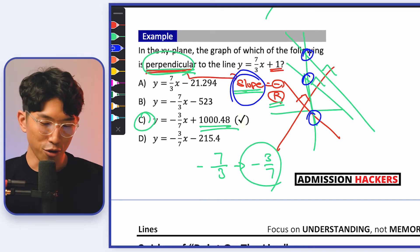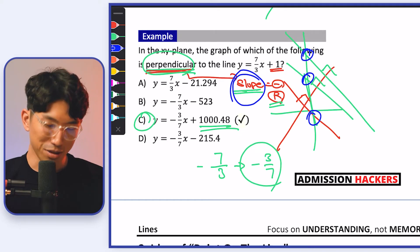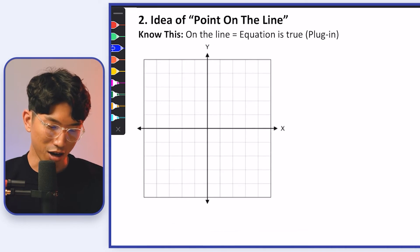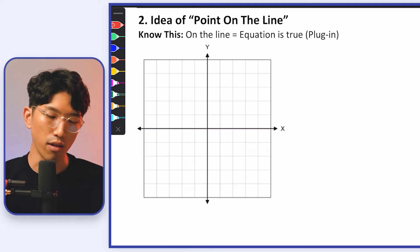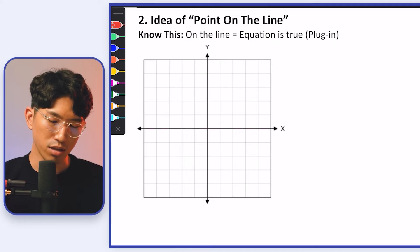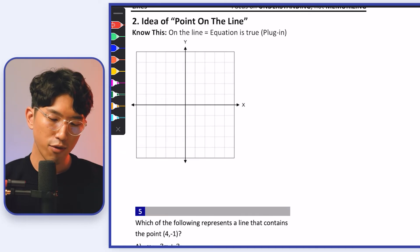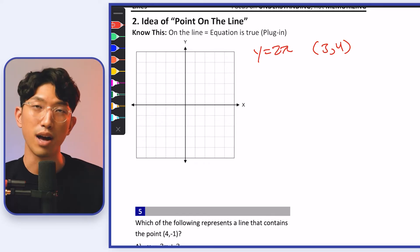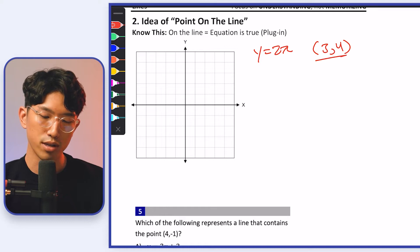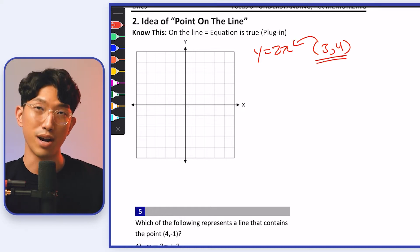Now that we've covered what you should have known 15 years ago, let's move on to the second concept: the idea of a point on the line. What does this mean? Let's say you have a question like this: y = 2x. The question is wondering, is the coordinate (3, 4) on the line? How can you check whether this coordinate is on this graph or not?